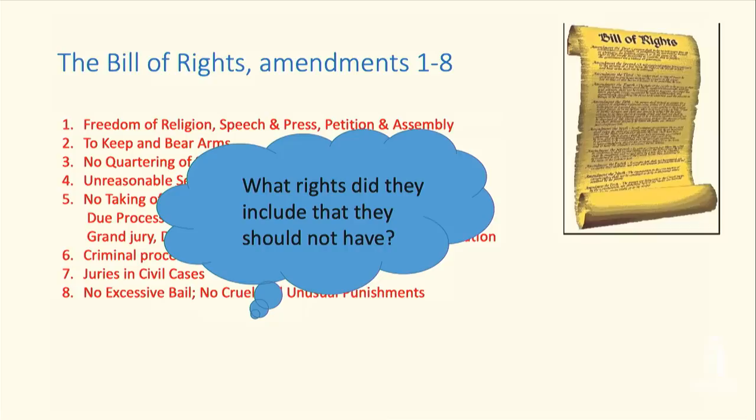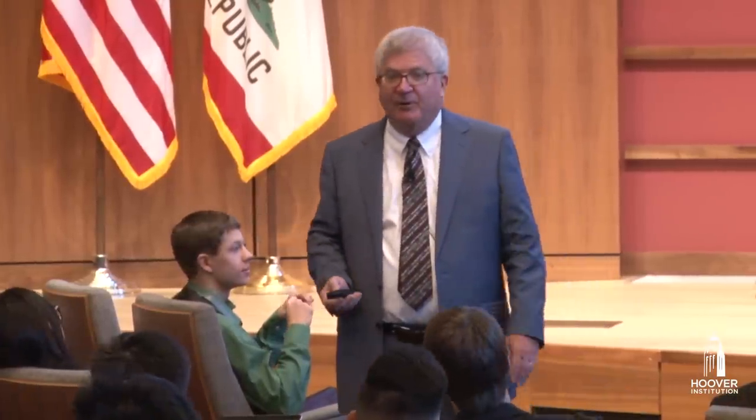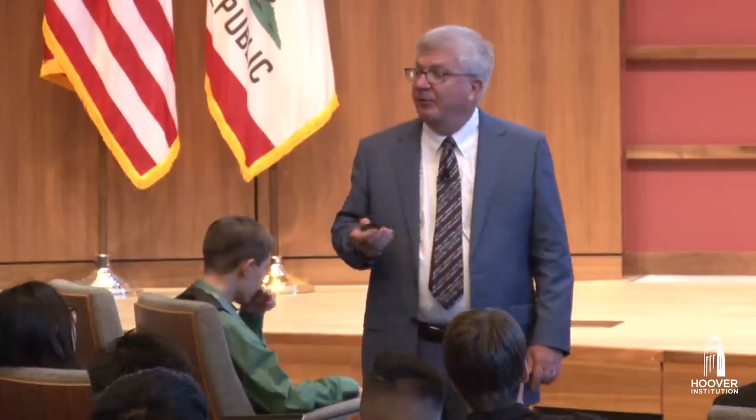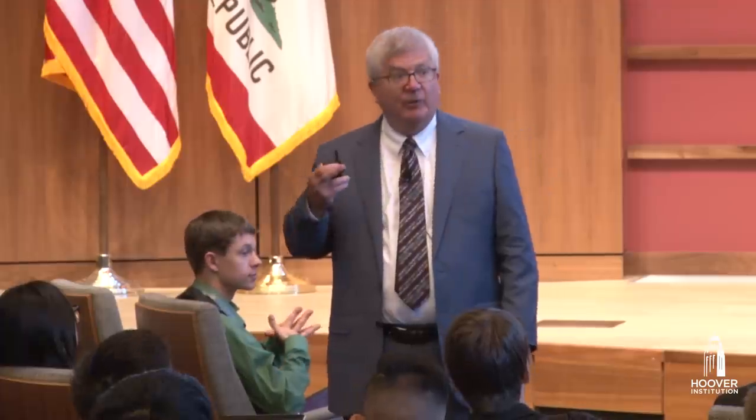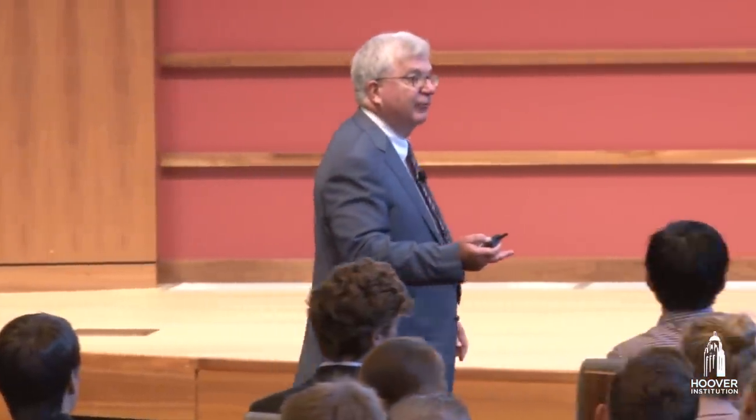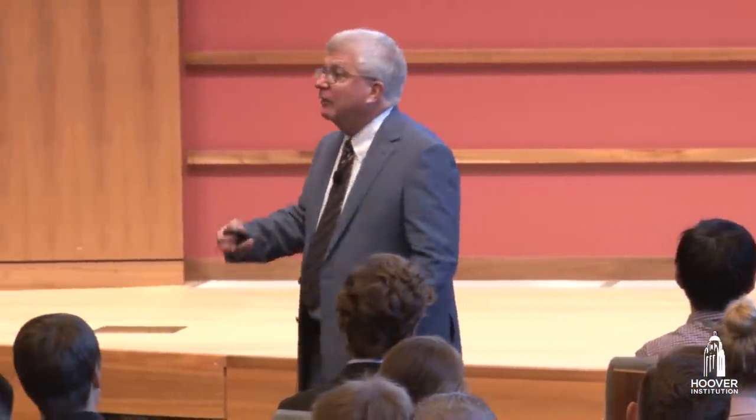Did they include any rights that should have been left out — any over-inclusion? Does anyone have a candidate for a right that shouldn't have been included? The Second Amendment — gun rights are the obvious choice. Many people think it was not a mistake, but many think it was. It's probably the most controversial. Though note that aspects of capital punishment law are also very controversial, as is protection of property rights, and today, especially among young people, freedom of speech is becoming controversial.